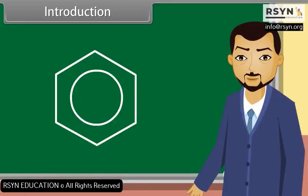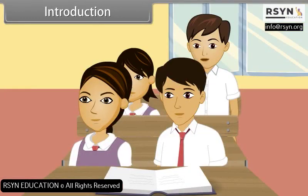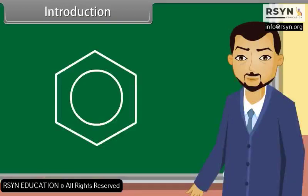And now, who will define aromatic hydrocarbons? Sir, aromatic hydrocarbons are those which contain one or more benzene rings. Very good, Rahul. Today we will learn about aromatic hydrocarbons. Come, let's start.